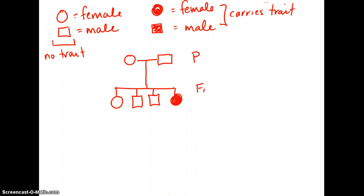and one girl that doesn't. This female has a child with a male that does not carry the trait, and they have children, and their children all seem to carry the trait.